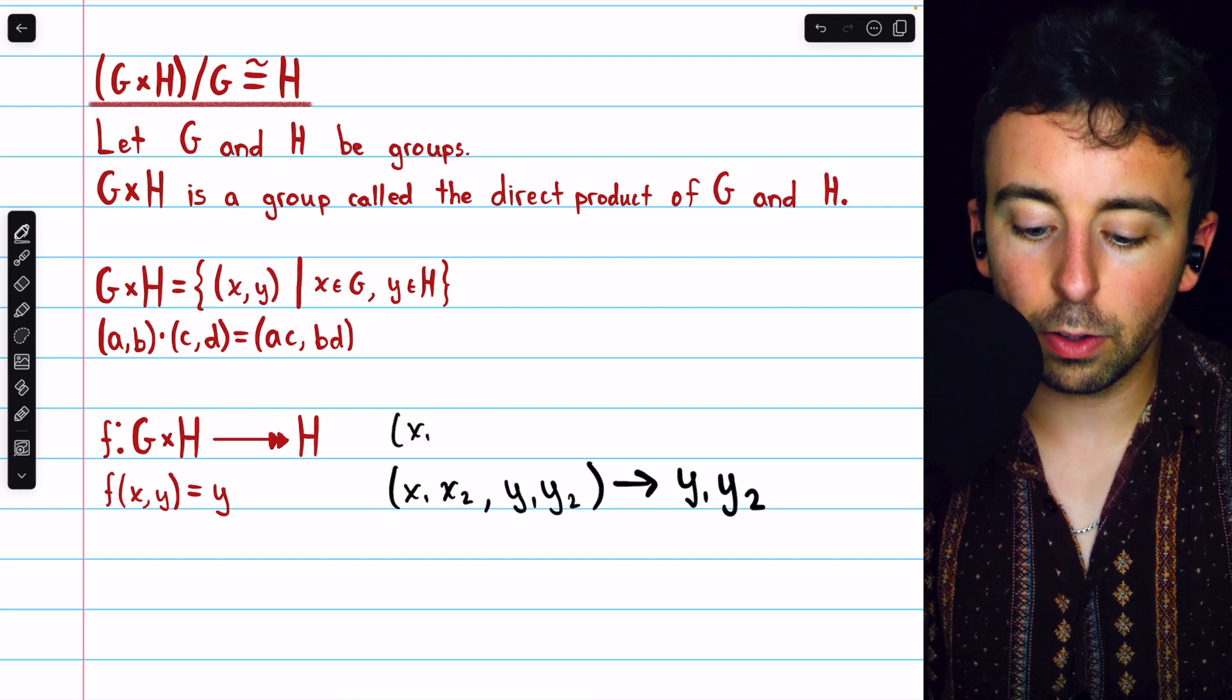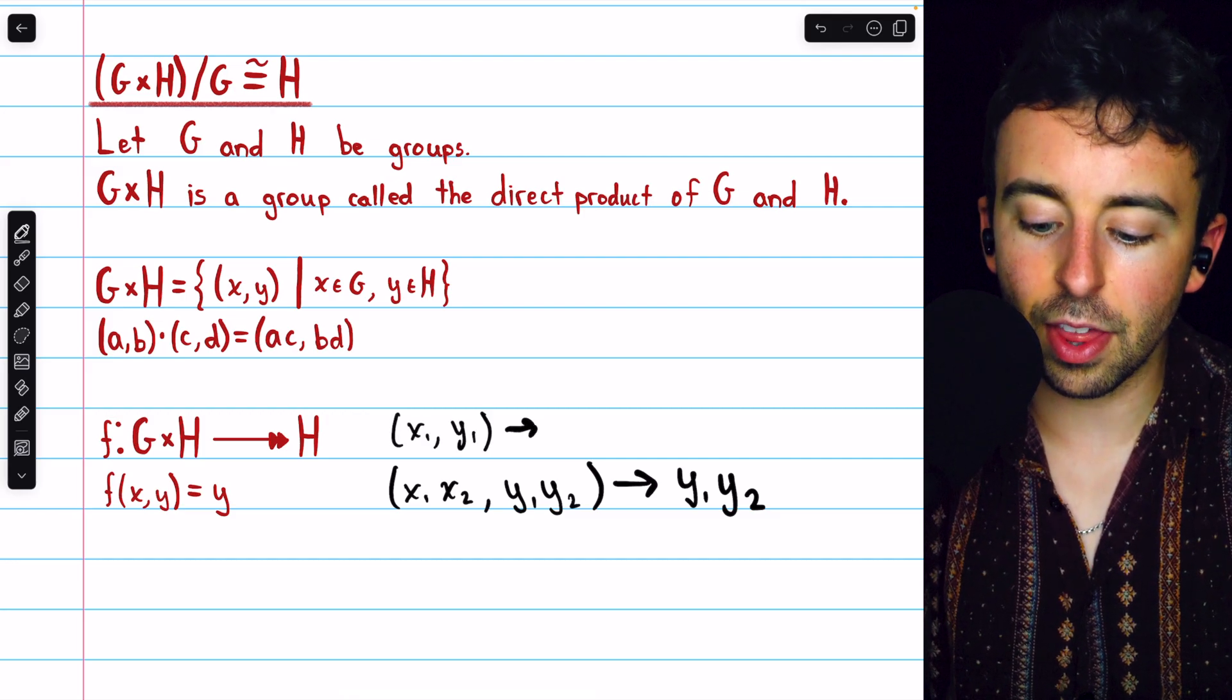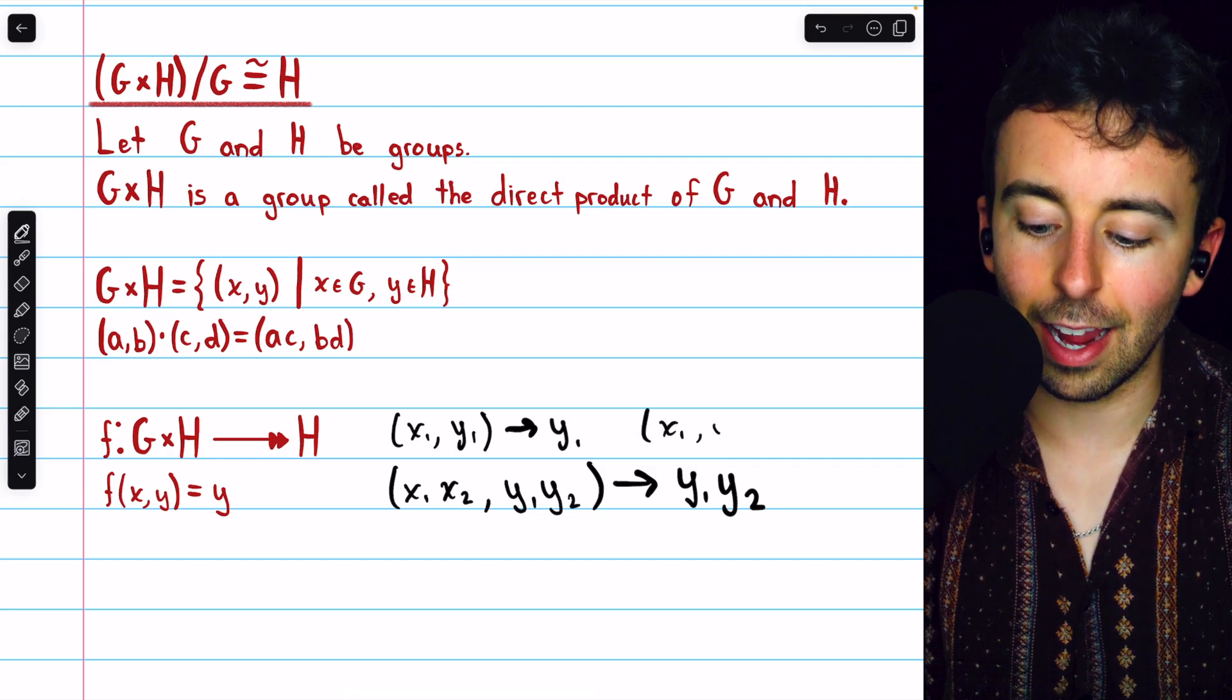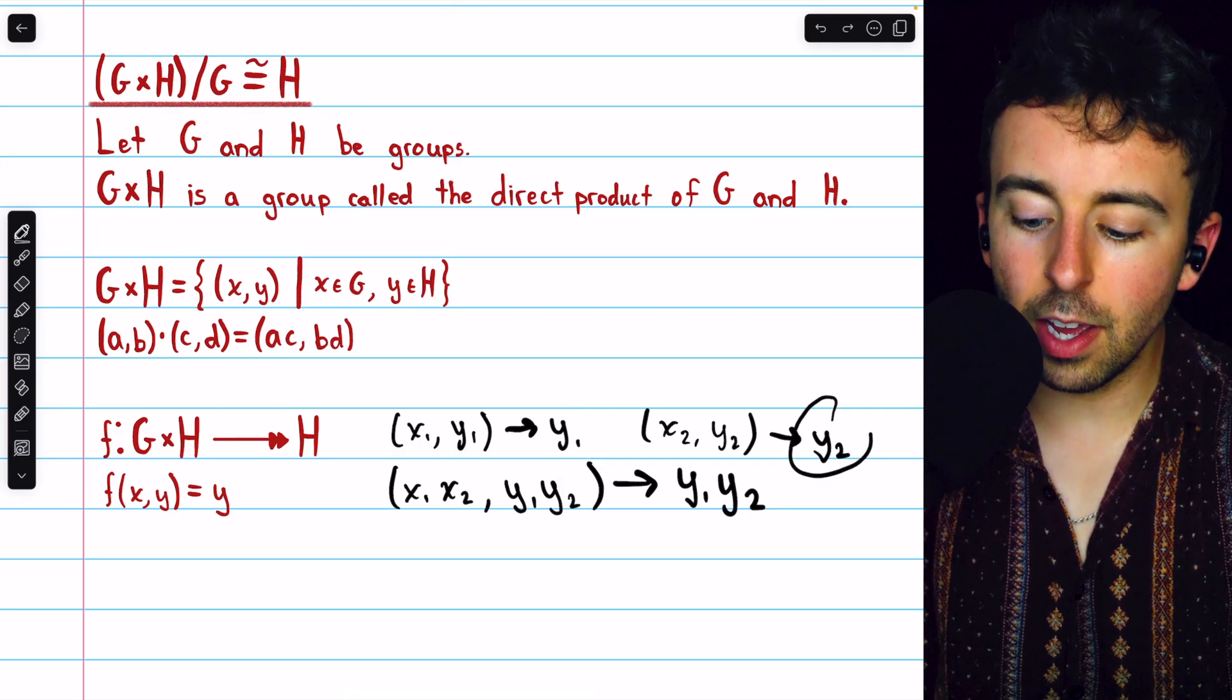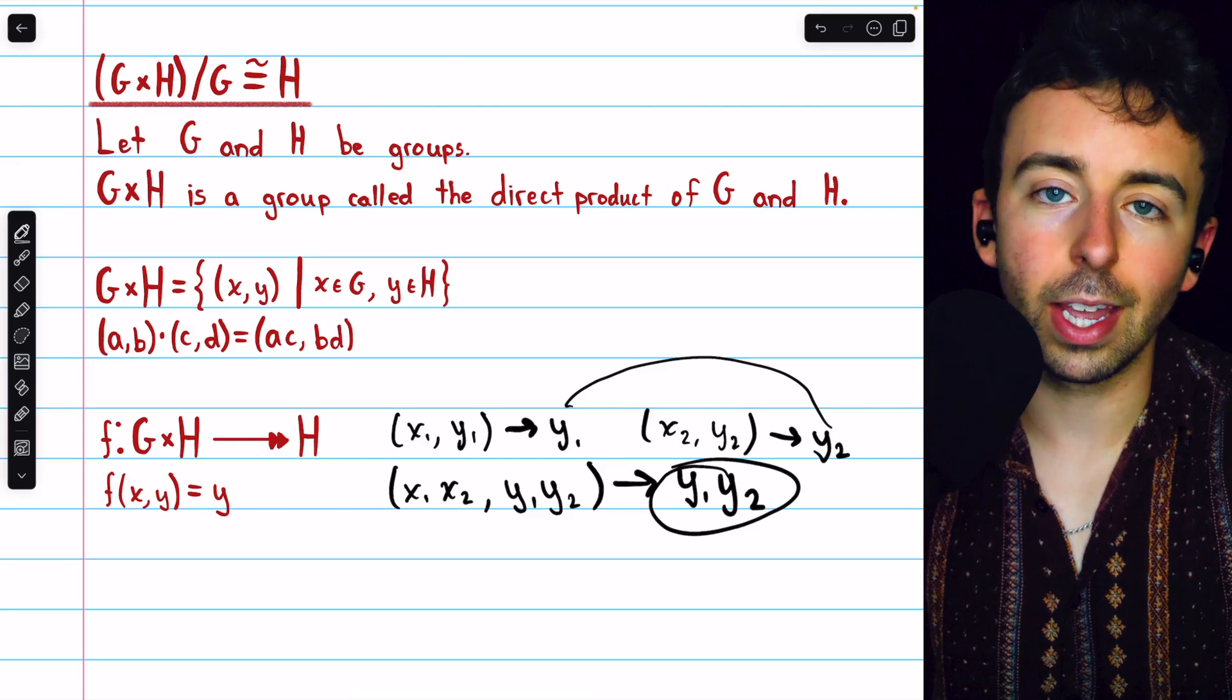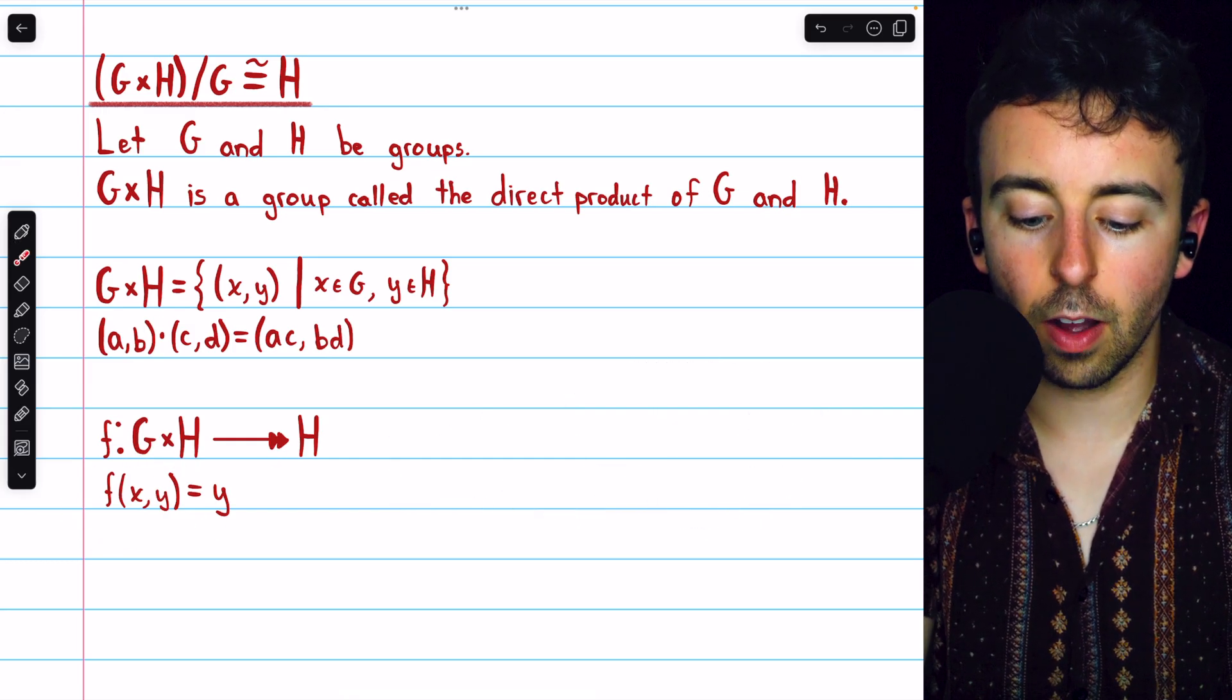the second component would just be the composition of those two elements from H, and so it would get mapped to the composition of those two elements from H. If we put the ordered pairs from the direct product through the homomorphism first, and then combine the resulting elements, it's clear that we would get the same thing. Doing it this way, one ordered pair gets mapped to Y1, the other one gets mapped to Y2, and then of course they would be composed, and we would get Y1, Y2.